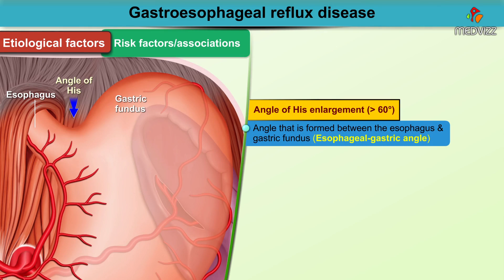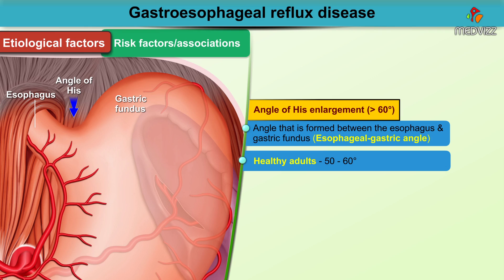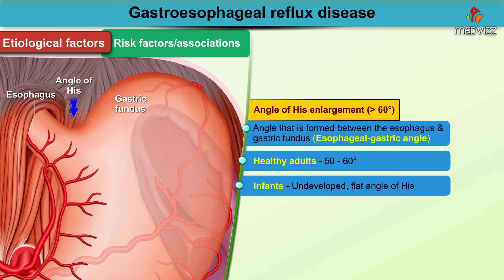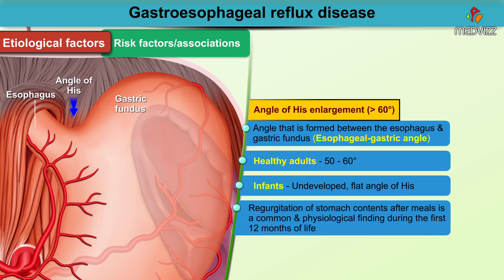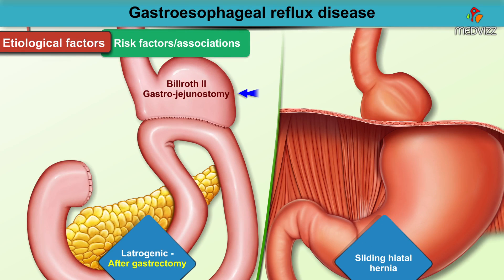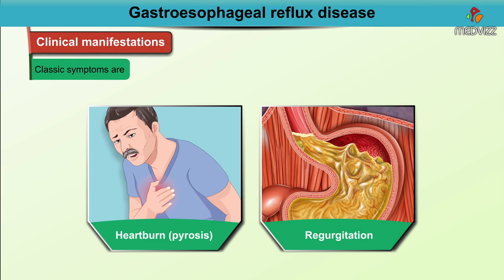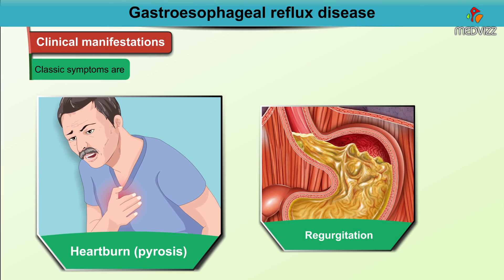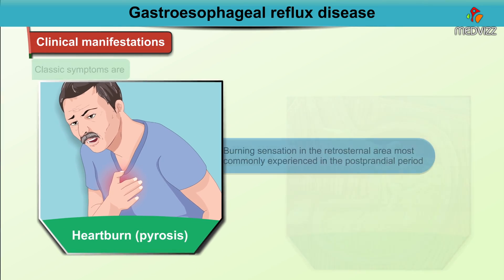The angle of His is the angle formed between the esophagus and the gastric fundus. In healthy adults it is about 50 to 60 degrees, whereas in infants the angle of His is usually undeveloped and flat, making regurgitation of stomach contents after meals a common and physiological finding during the first 12 months of life. Post-surgical procedures after gastrectomy due to iatrogenic causes can also cause GERD symptoms, and about 90% of patients have severe GERD in the setting of sliding hiatal hernia.